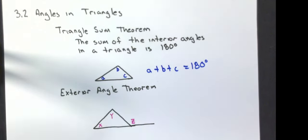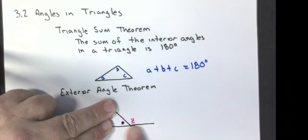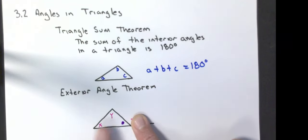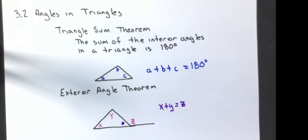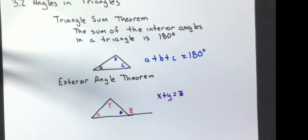Notice that this little purple dot, Z plus the purple dot has to equal 180 because they're a triangle. So that's telling me that X plus Y has to equal Z.